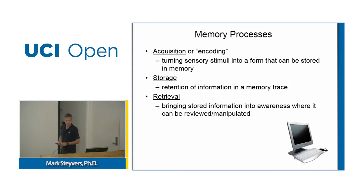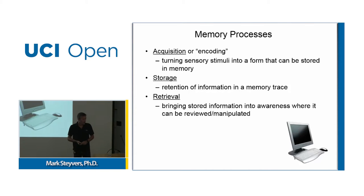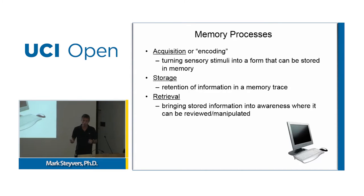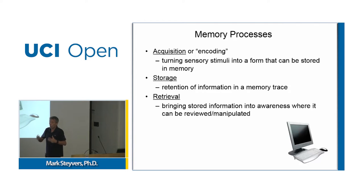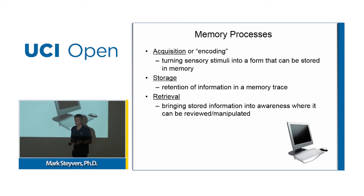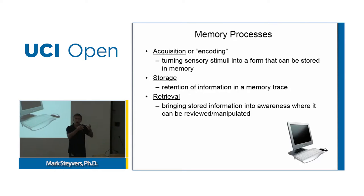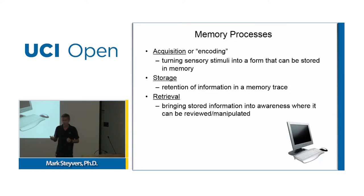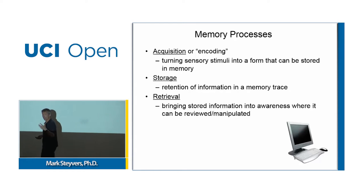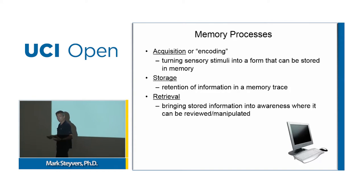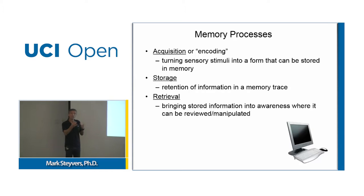In terms of memory processes, information has to come to us to be stored in memory in some form. We have to acquire the information, we have to encode it. We rarely, if ever, store the raw information. When we listen to somebody speak, we rarely store the raw acoustic waveform in memory. We store various bits and pieces — intonation patterns, words, the meaning of words — and those are all pieces of information that we can acquire or encode.